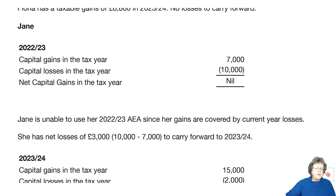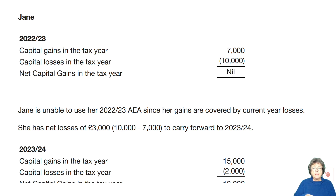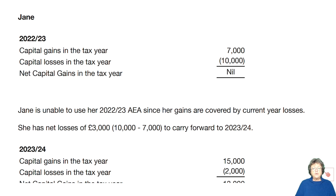One thing to note: if an exam asks you to do the same thing twice, the answers will be different. If you could do it once, why would they ask you to do it again? Fiona's situation is fairly straightforward — gains, losses, what's the situation? Jane's situation must be different. So if you're asked to do something twice and you end up with the same result or the same process, just step back a moment and ask yourself why.